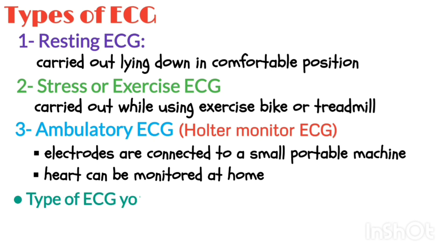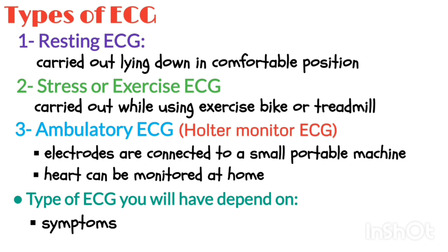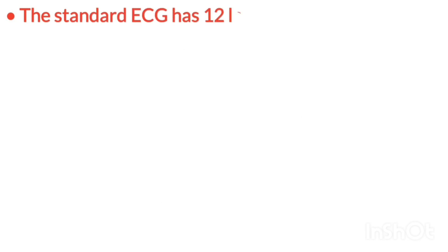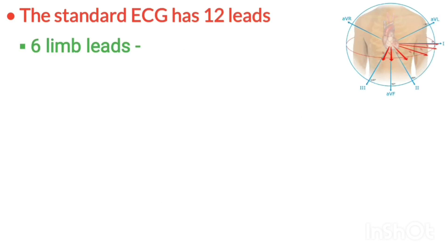The type of ECG you will have depends on your symptoms and the heart problem suspected. The standard ECG has 12 leads. Six of the leads are considered limb leads because they are placed on the arms and legs of the individual.